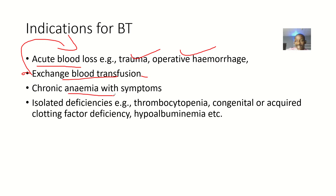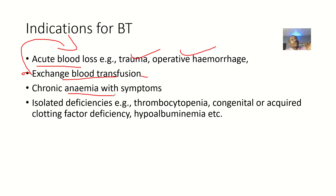Also, if the person has chronic anemia with symptoms — you know, chronic anemia where blood cells are not being formed properly, or have been formed but not with the proper shape, or there is increased destruction of cells and crises — you might just want to be transfusing blood to the individual.